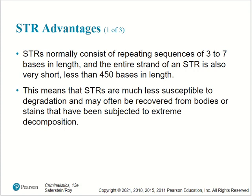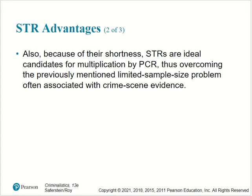STR advantages: STRs normally consist of repeating sequences of three to seven bases in length, and the entire strand of an STR is also very short — less than 450 nitrogenous bases in length. This means that STRs are much less susceptible to degradation and may often be recovered from bodies and stains that have been subjected to extreme decomposition. Because of their shortness, STRs are ideal candidates for multiplication by polymerase chain reaction, thus overcoming the limited sample size problem often associated with crime scene evidence.